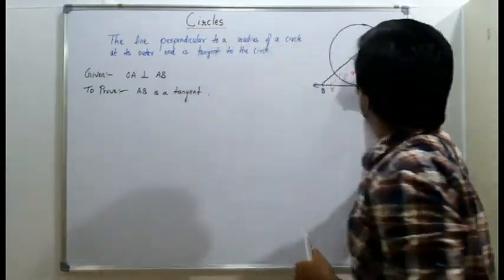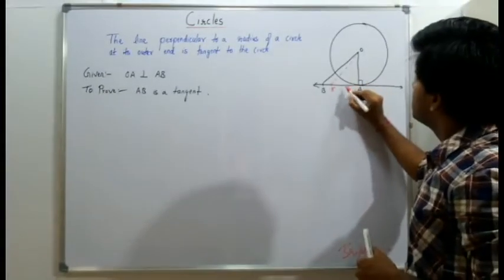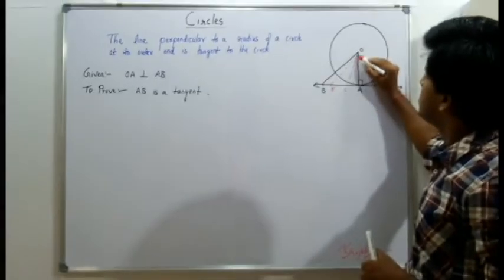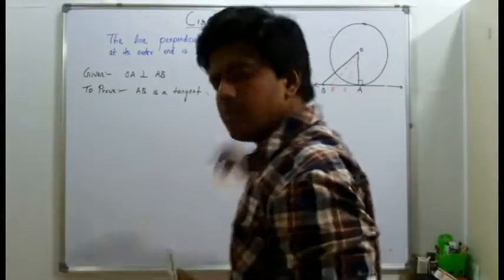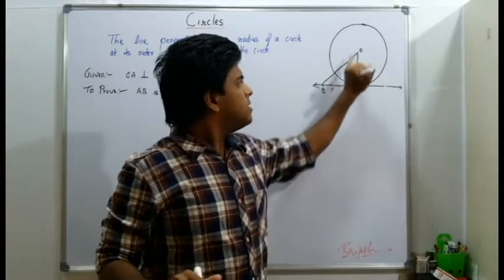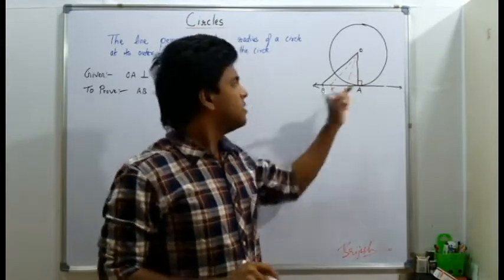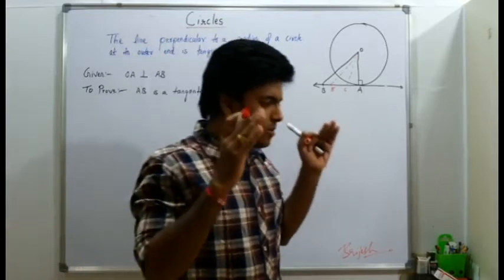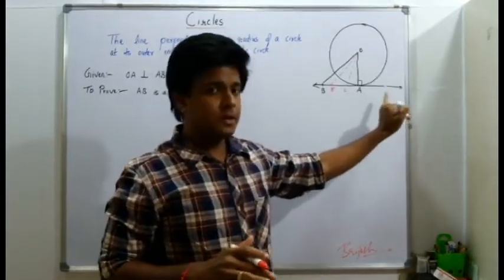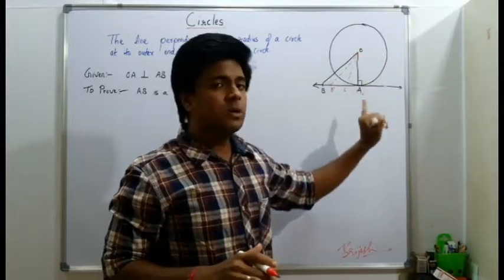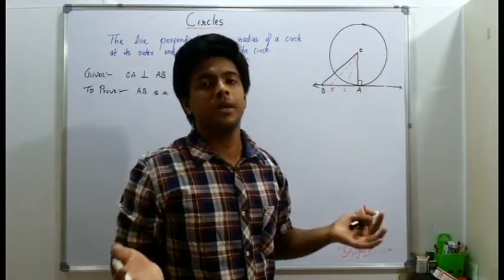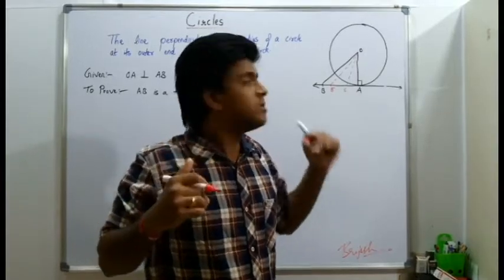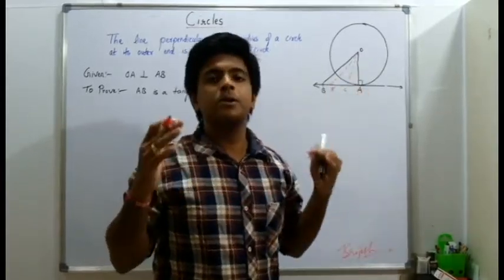Let's take other points. Let me take this as C. Again, the same thing is happening here. This is perpendicular and OC is the hypotenuse. Again, OC will be greater than OA. So however many points there are on this line, and if I join them with O, all of them will become hypotenuse. Every point on this line would be a hypotenuse and that hypotenuse is going to be greater than OA.